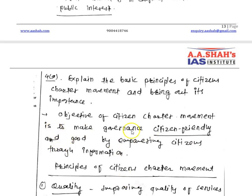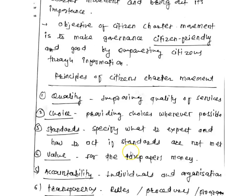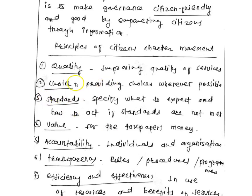Citizen charter provides information to citizens about what services they provide and what is their mission and objective. The first principle of the citizen charter movement is Quality — it seeks to improve the quality of services. Whatever services the government provides, improvement in their quality is expected.